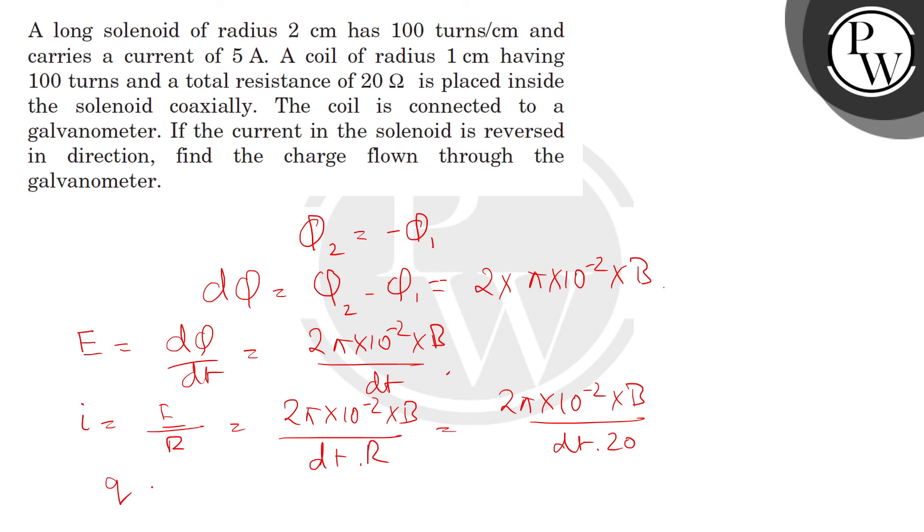And q equals I multiplied by dt which equals 2π × 10⁻² × B/20 × dt × dt. And putting the value of B here, we will get the answer nearing 2 × 10⁻⁴ coulomb.